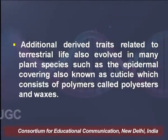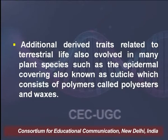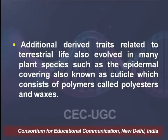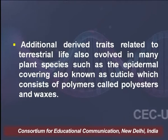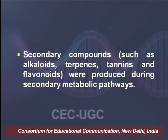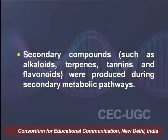These were some of the adaptive features which gradually got derived as plants moved from aquatic habitat towards terrestrial habitat. Apart from these, there were additional derived traits related to terrestrial life which evolved in many plant species, such as epidermal coverings also known as cuticle, which consists of polymers called polyesters and waxes. Secondary compounds such as alkaloids, terpenes, tannins, and flavonoids were also produced during secondary metabolic pathways.